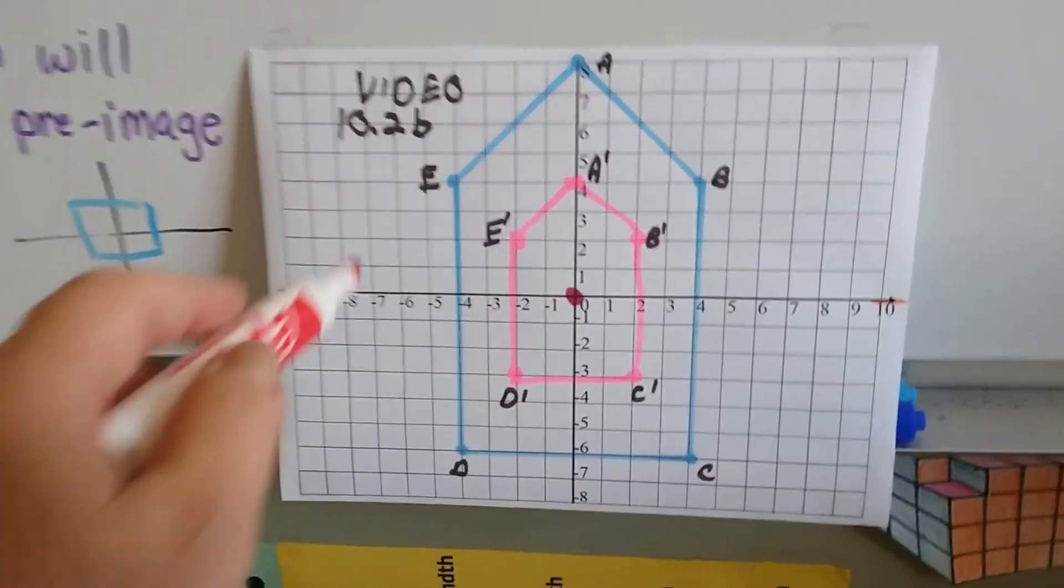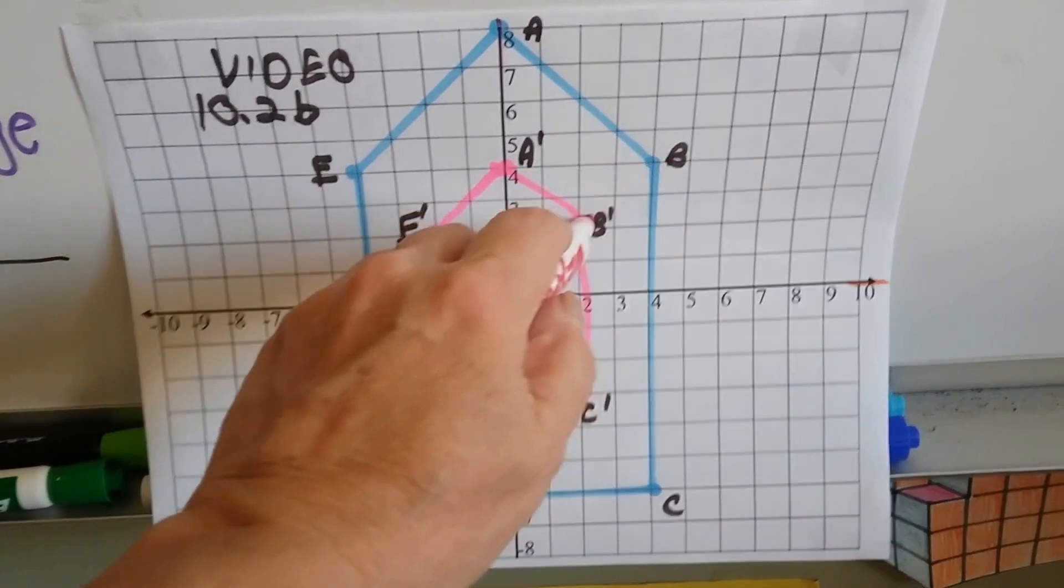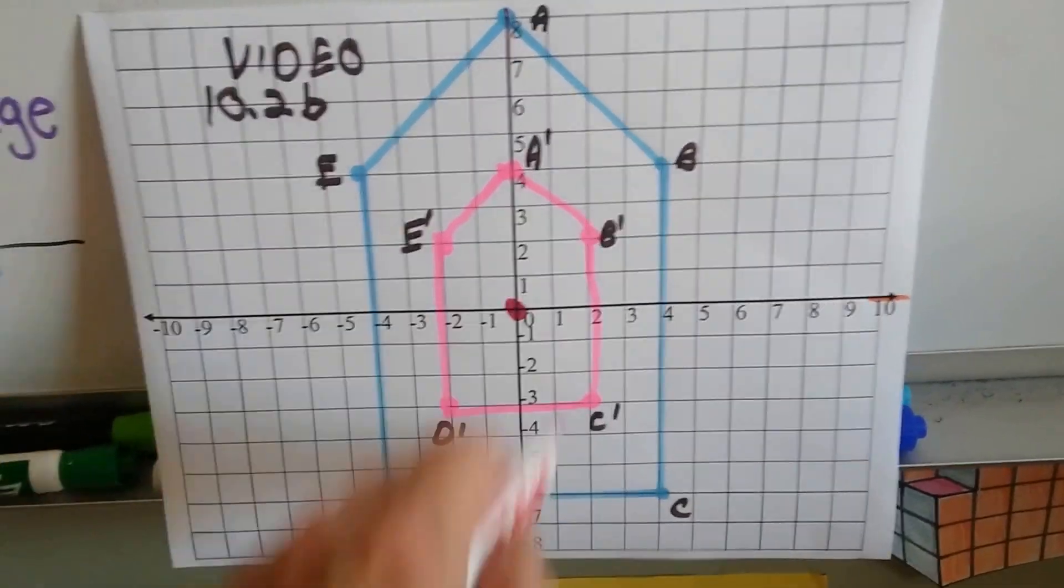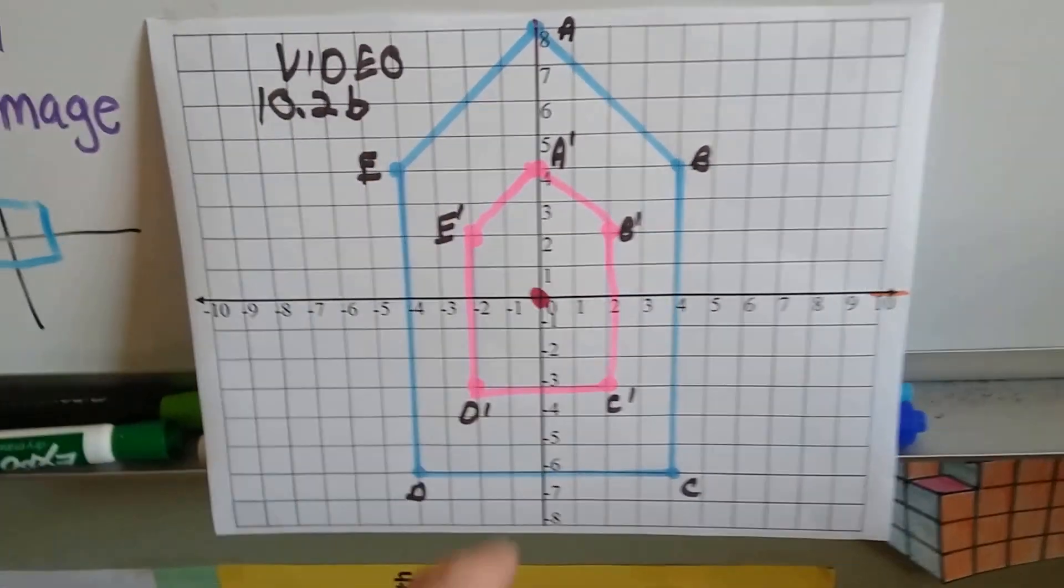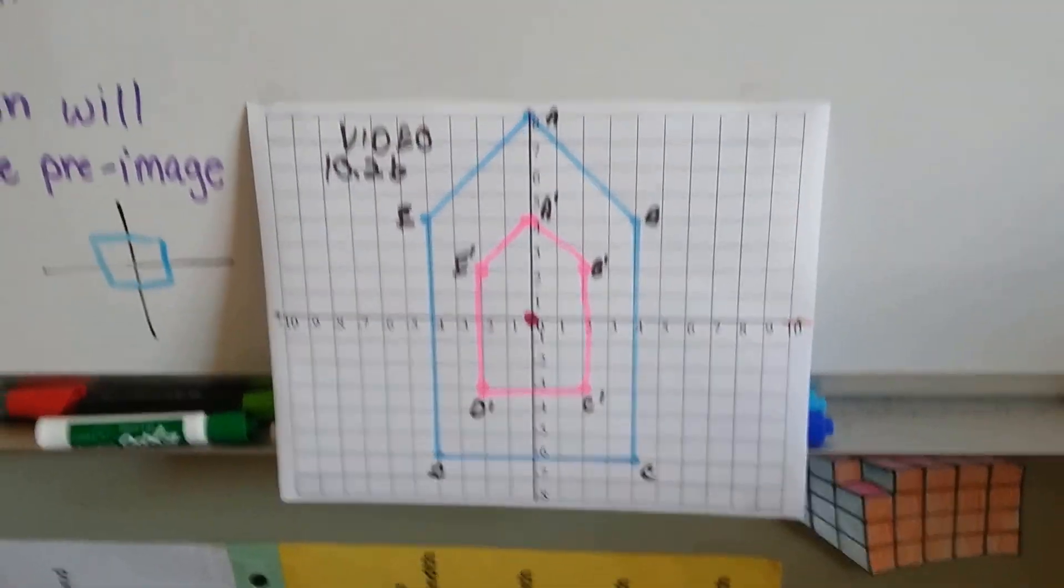If we connect A to A prime and B to B prime and C to C prime and D to D prime and E to E prime, they'll all meet and intersect at (0,0).